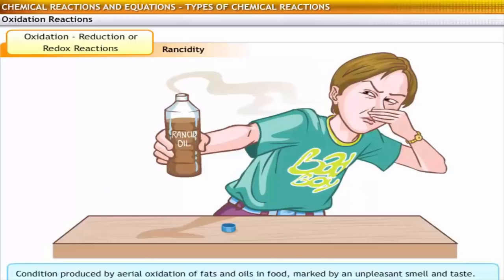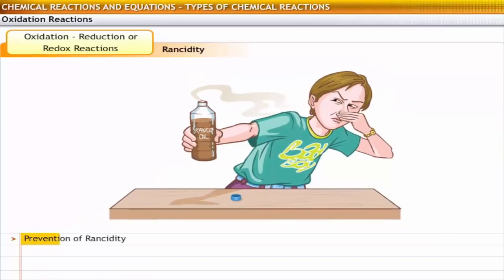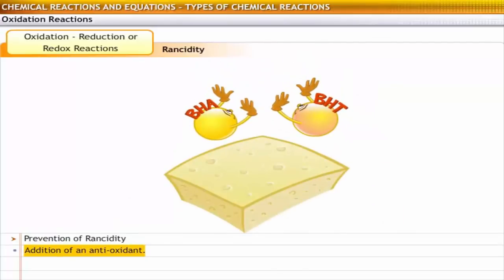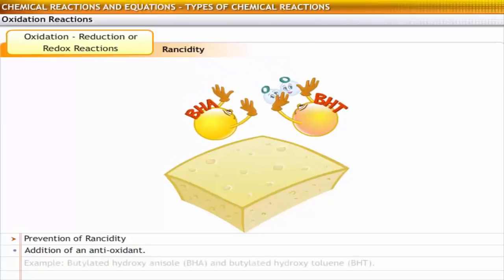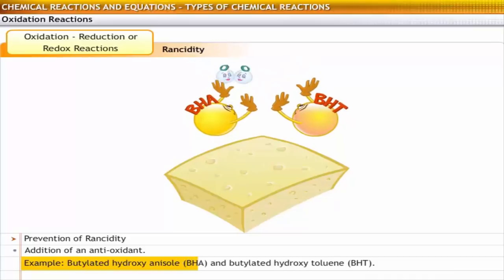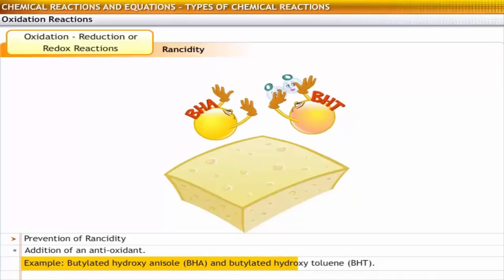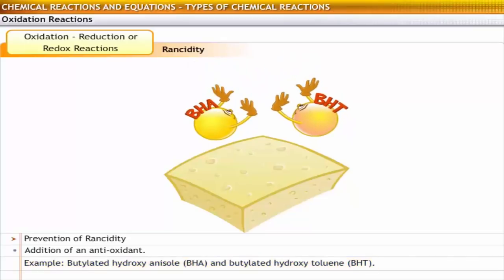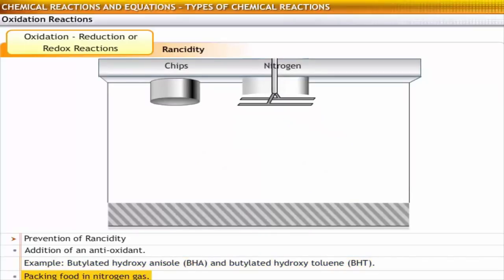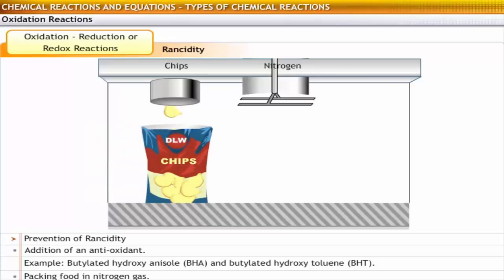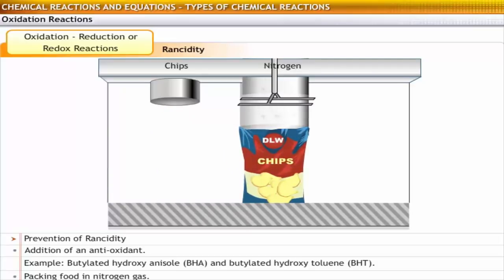Rancidity is the condition produced by the oxidation of fats and oils in food. It is marked by an unpleasant smell and taste. Two ways to protect food from rancidity are: the addition of an antioxidant — a substance that prevents oxidation — and packing food in nitrogen gas. Nitrogen prevents oxidation of food. For example, rancidity in potato chips can be prevented by flushing the bags with nitrogen while packing.